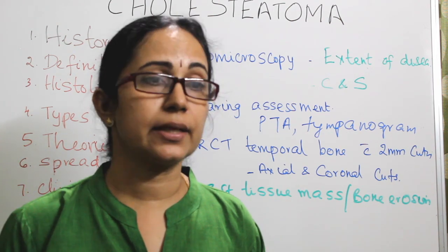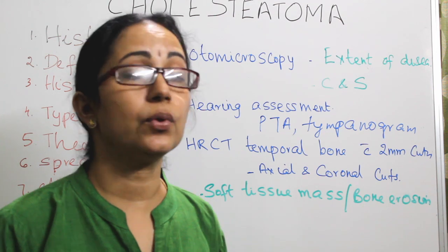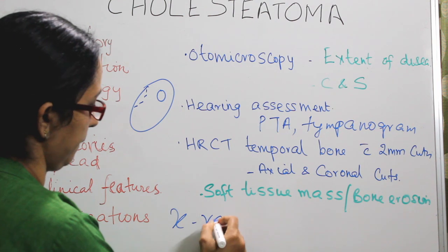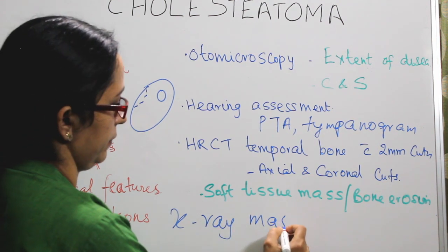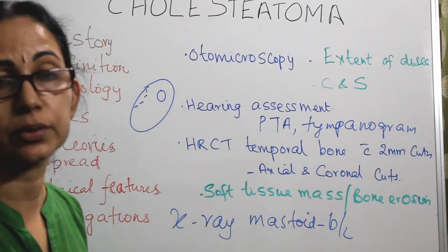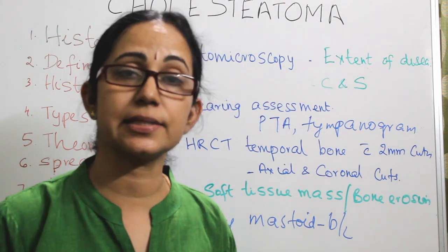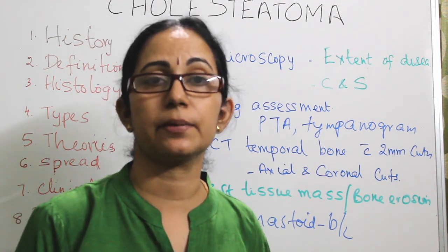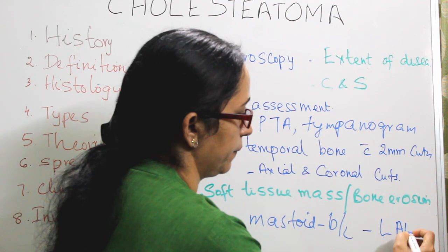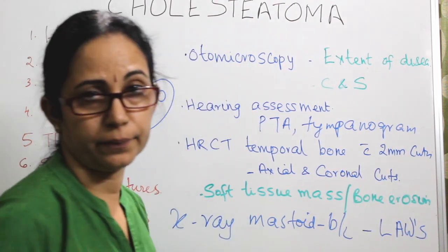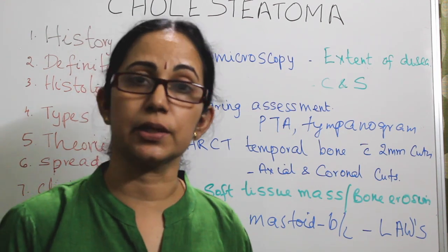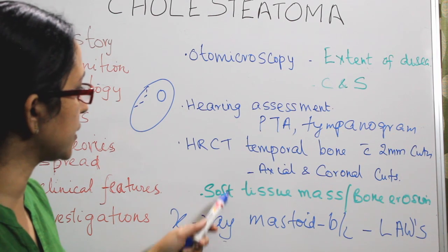Radiology: X-ray mastoid — lateral oblique or Law's view — is still important. It is always taken bilaterally, even if disease is unilateral. In cholesteatoma, X-ray shows bone erosion with surrounding areas of sclerosis.